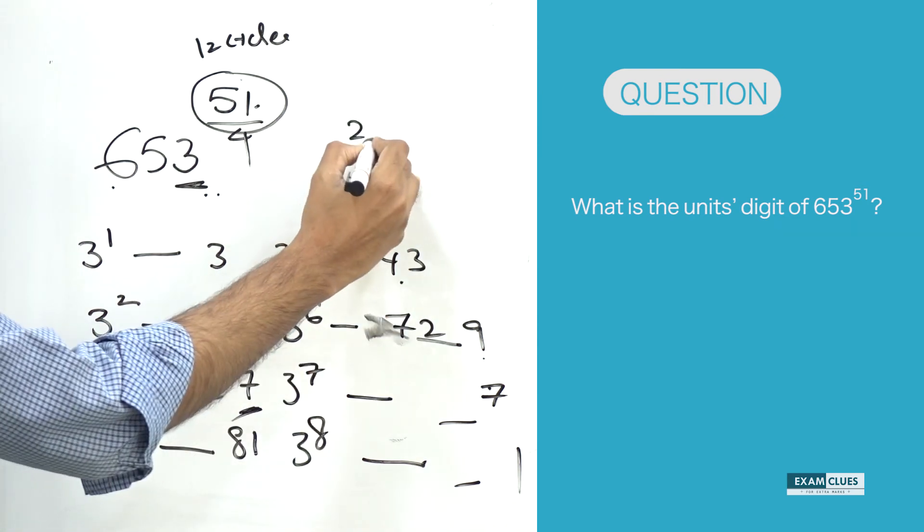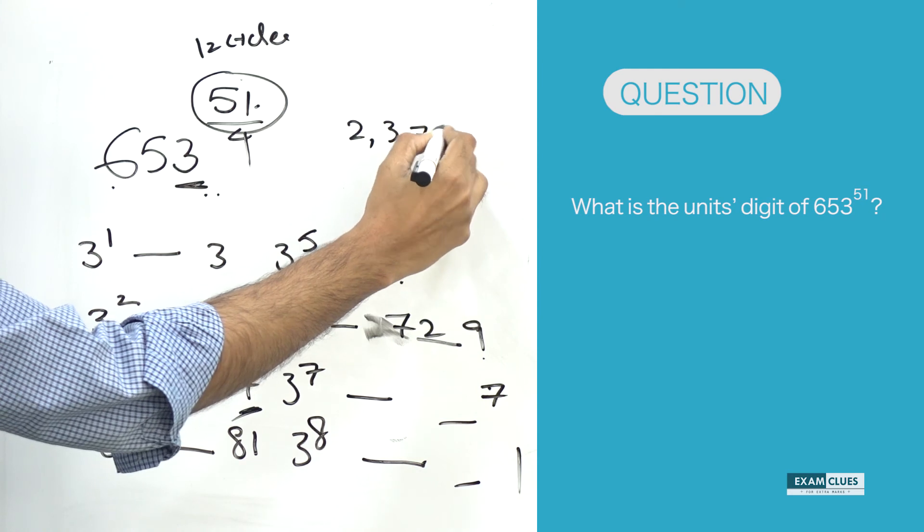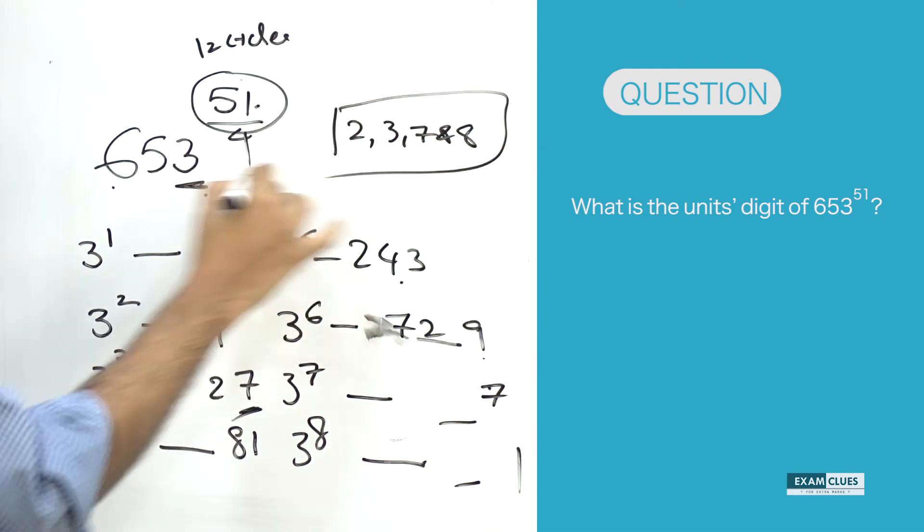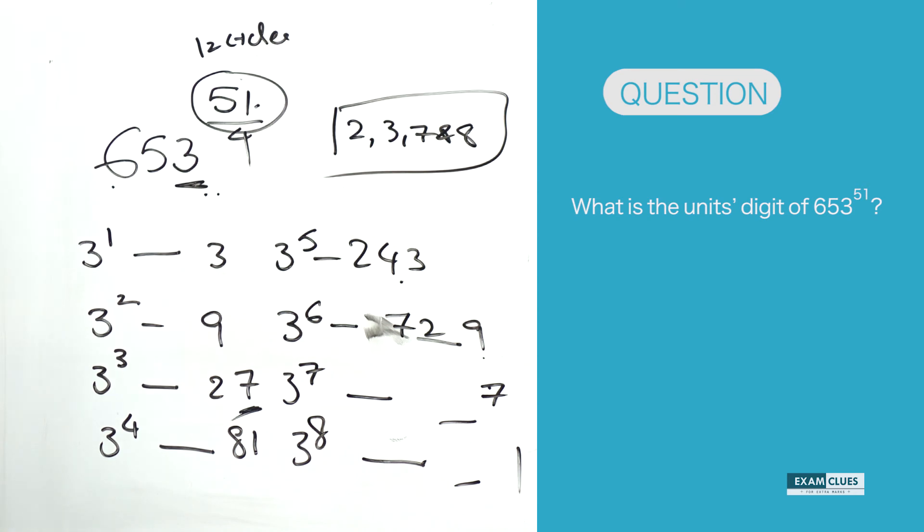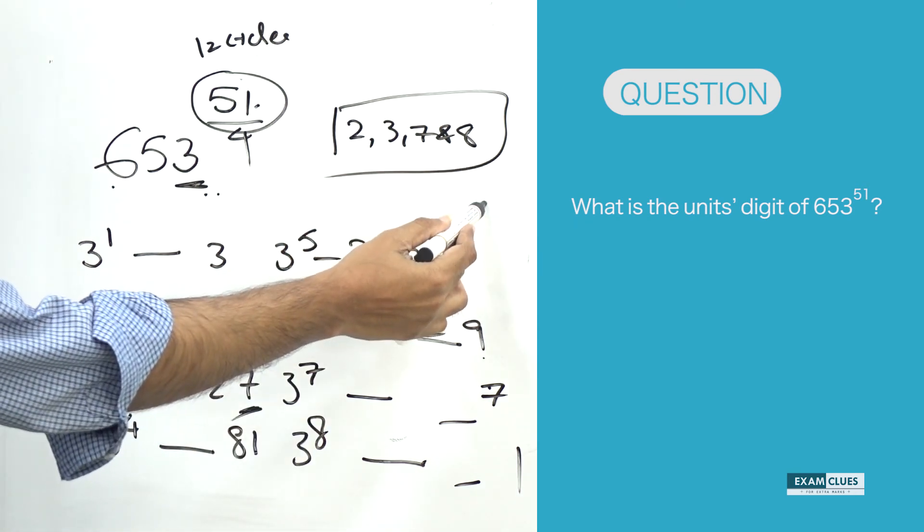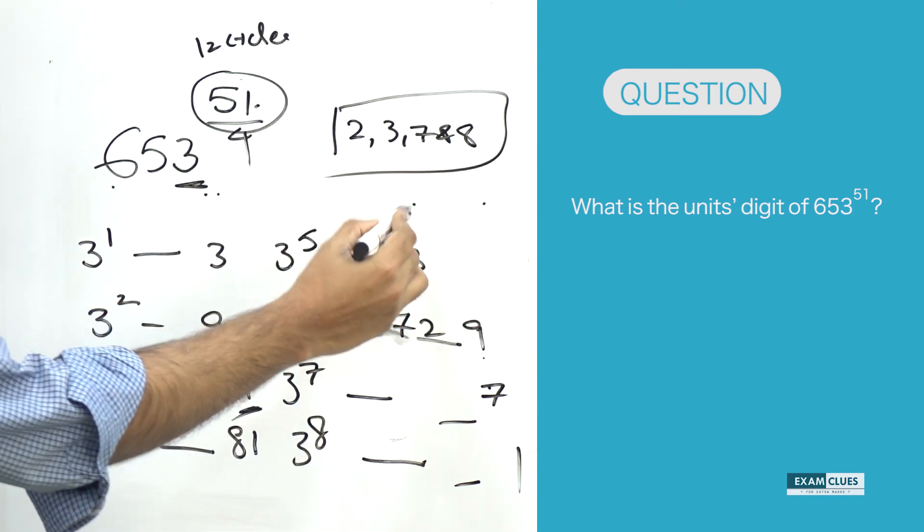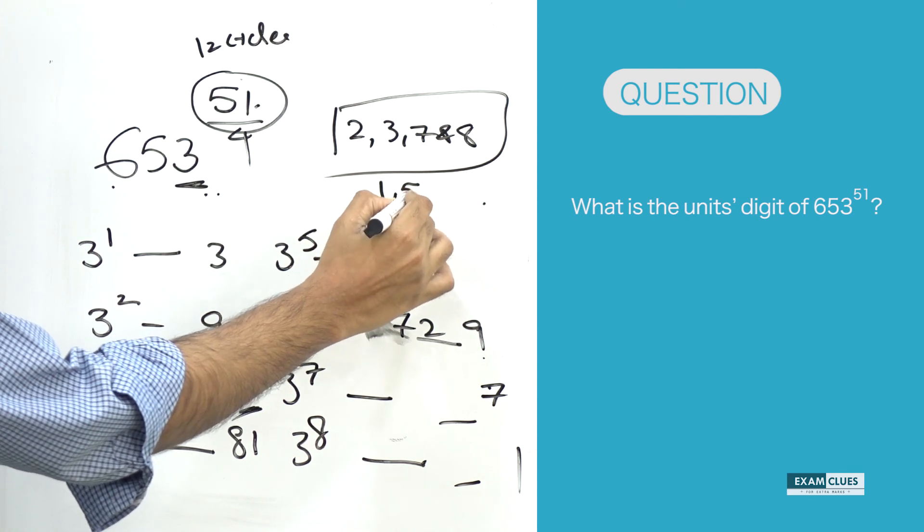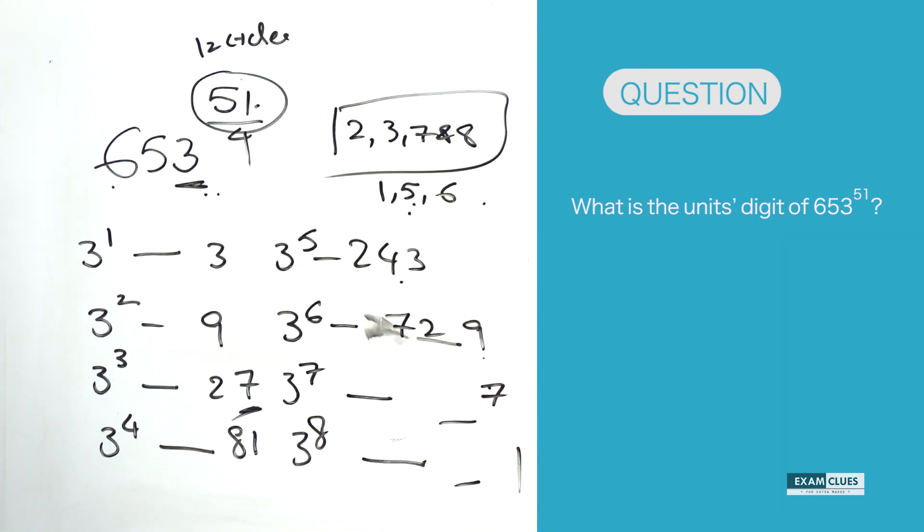Here I would like to give a hint. I'd like to give one specific note: 2, 3, 7, and 8 have a cyclicity of 4, whereas 1, 5, 6 have cyclicity of 1.